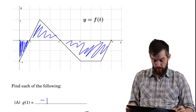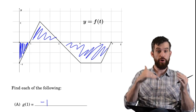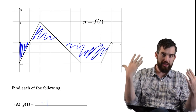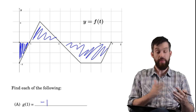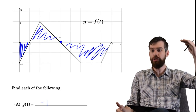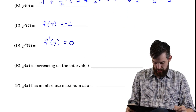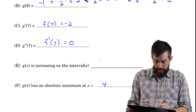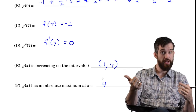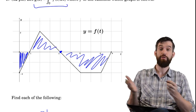For the increasing interval and absolute maximum of g: g is increasing when g′ = f(x) is positive. Looking at the graph, f is positive from 1 to 4. So g is increasing on [1, 4]. The maximum occurs at x = 4, where you've been accumulating the most positive area and then the function starts adding negative contributions.